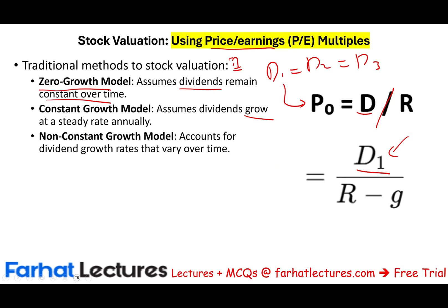We also discussed the non-constant growth model, which accounts for dividend growth that varies over time. To compute this, we utilize the time value of money. Notice that in all three models, we are looking at dividends to determine the stock price — the stock price is a function of dividends.